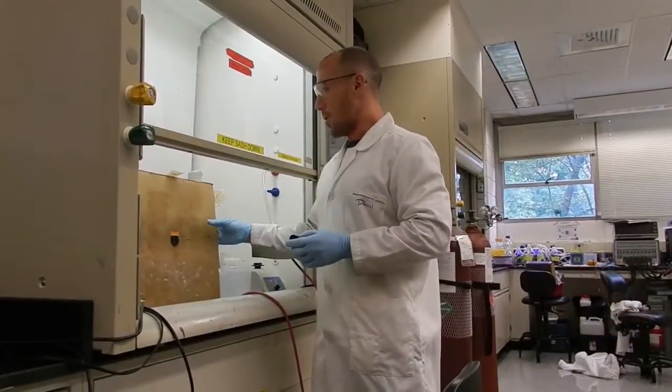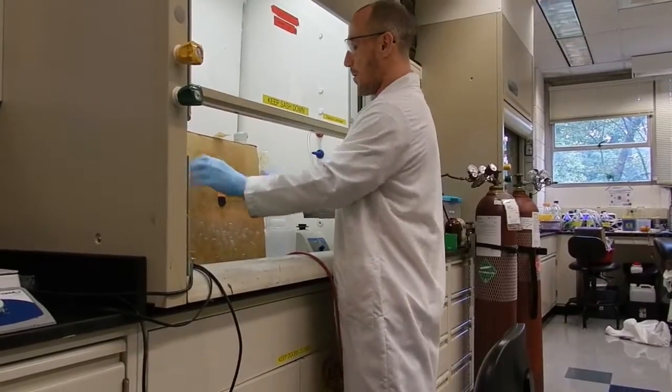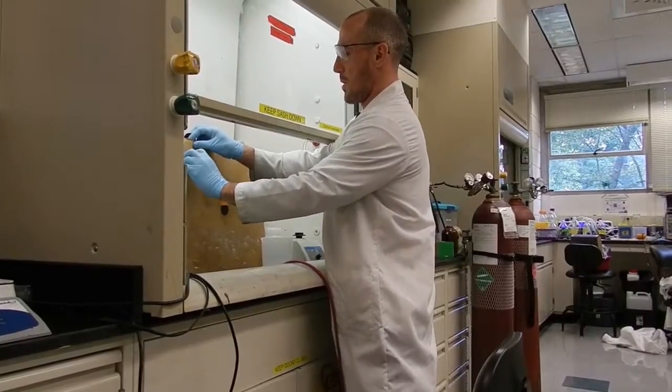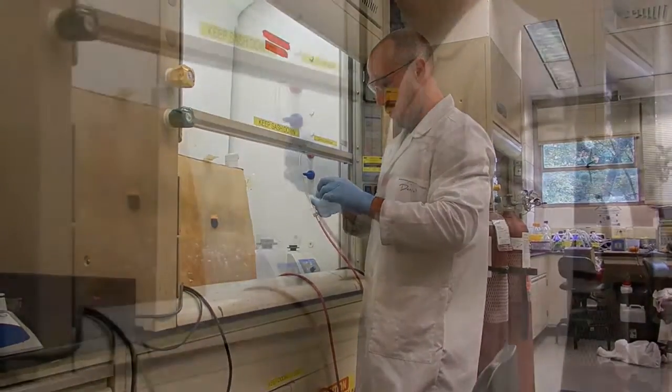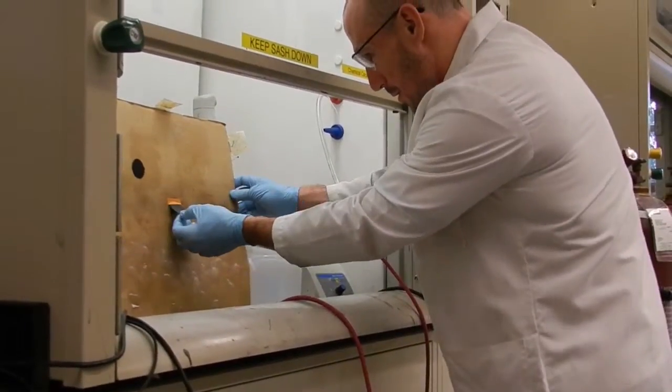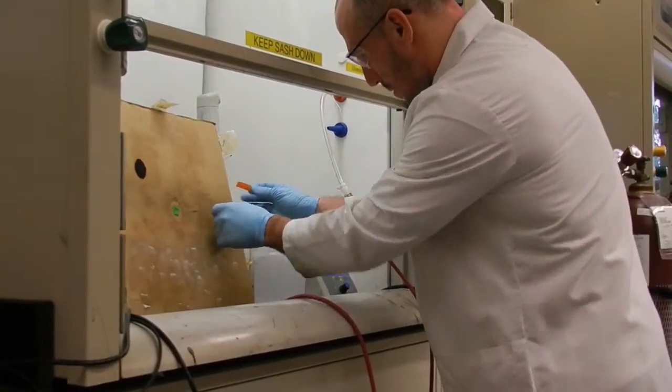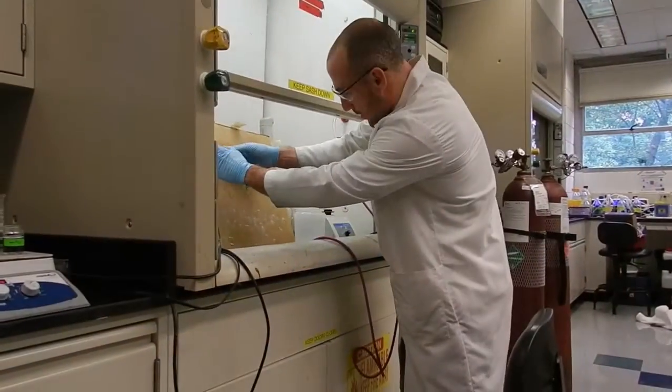First, we're going to take our cathode and we're going to fix it to something that we can spray on. I've chosen this big piece of cardboard so that we can keep the splatter from going all over the fume hood. Once you've fixed it, you're going to want to put something across the top of the cathode so that you can preserve a place for your connection point in your microbial fuel cell.